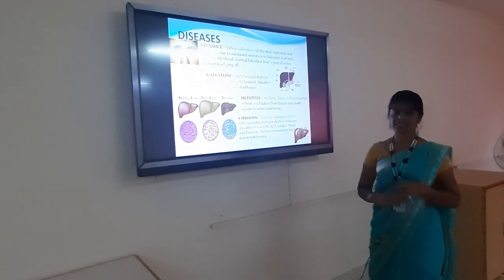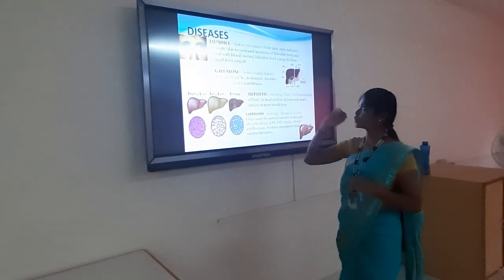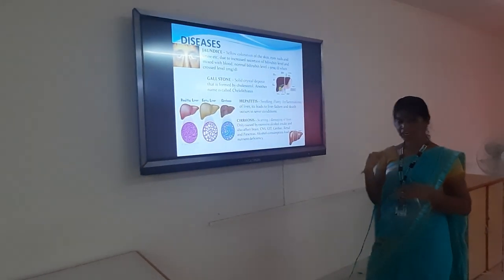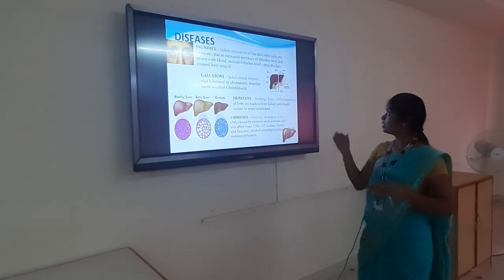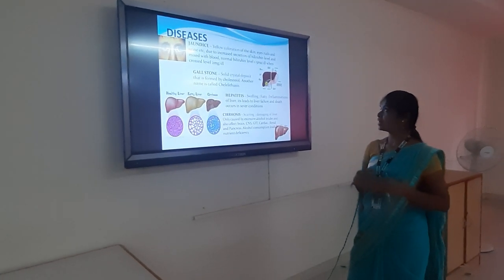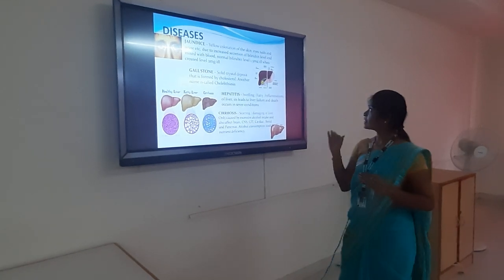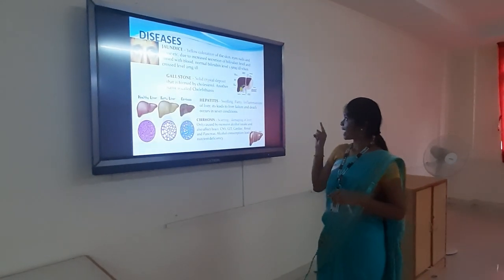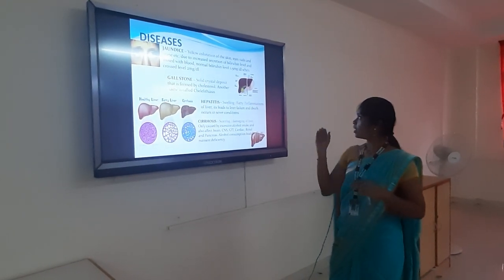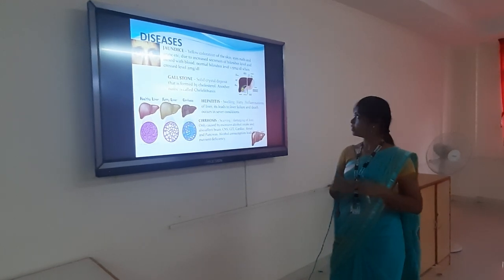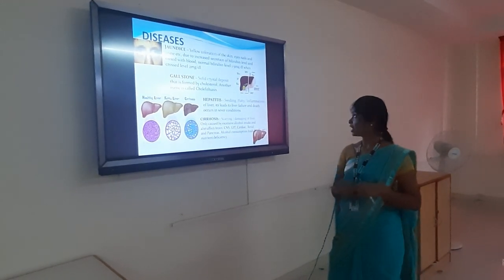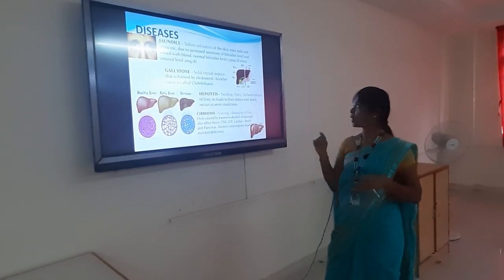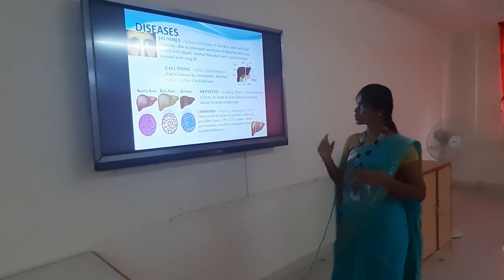What are the liver diseases? First is jaundice, which means yellow fever — discolouration of the skin, eyes, nails, and urine due to increased secretion of bilirubin. Bilirubin is an enzyme produced by the liver, and when it mixes with the blood, discolouration is formed. Normally, bilirubin level is 1.5 mg per dL. When it exceeds 2 mg per dL, it causes jaundice.